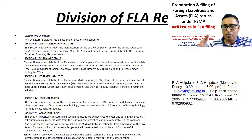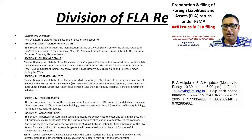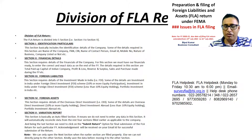The variation section is basically an auto-filled section. This means we do not need to enter any data in this section — it will automatically reconcile data from the rest of the sections filed earlier as applicable to the company. Being the last section, we need to click on the submit button to submit the return. This is the option for final submission of the FLA return for that particular financial year. After submission, an acknowledgement is received on your email ID confirming successful submission of the form.